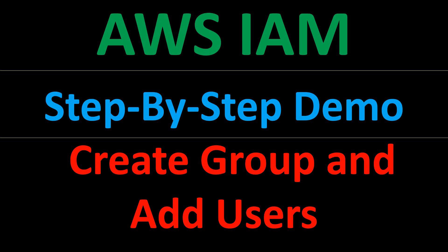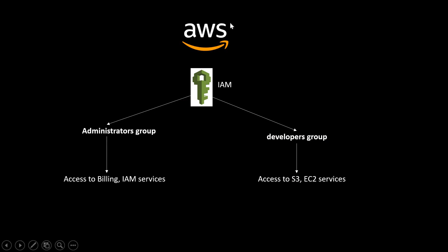Welcome to my channel. In this IAM video, I will show you how to create a group and add users to a group. This will be a step-by-step demo where we will see the process. In IAM, we will create two groups: an Administrators group and a Developers group. The Administrators group will have access to Billing and IAM services, whereas the Developers group will have access to S3 and EC2 services, and then we will add users to these groups.